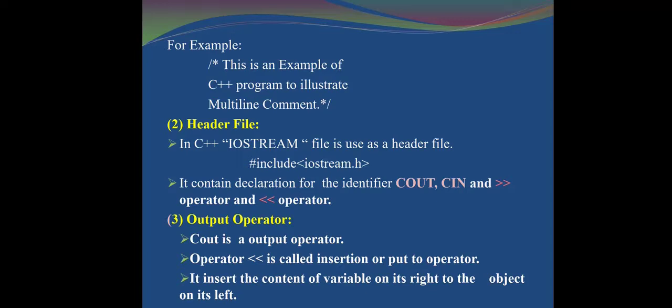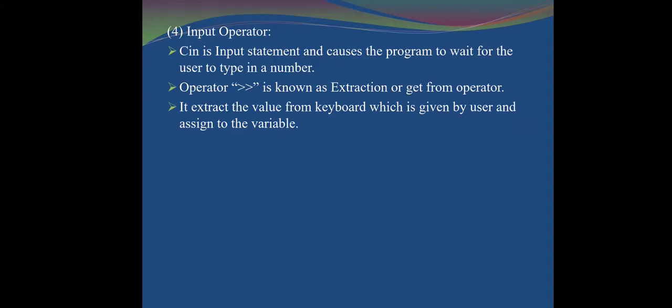The cout is the output operator. The insertion operator — that double-angle symbol — is called the insertion or put-to operator. It inserts the content of the variable on its right to the object on its left. For input, cin causes the program to wait for the user to type a value. The extraction operator — also a double-angular symbol — extracts the value from the keyboard given by the user and assigns it to the variable.